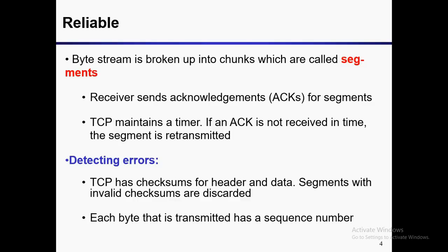TCP is reliable for another reason: the receiver sends an acknowledgement for segments. As soon as the receiver receives a TCP packet, it sends an ACK acknowledgement. If TCP doesn't receive an acknowledgement in time, it retransmits the segment — that's why it is reliable.